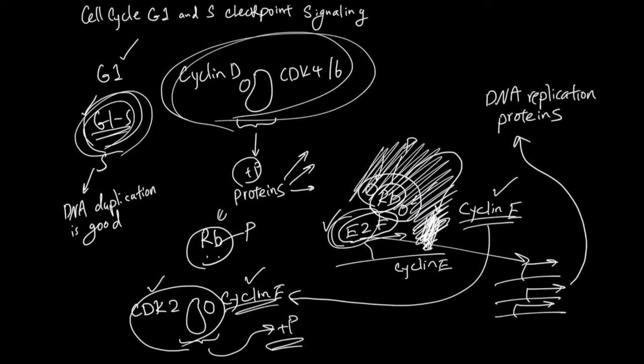So in summary, G1 phase makes sure that the cell is ready to synthesize its DNA and duplicate it. Cyclin D oscillates and as Cyclin D goes up, CDK4/6 activity goes up. And together, they phosphorylate many proteins. And at the end of this G1 checkpoint, RB gets phosphorylated.